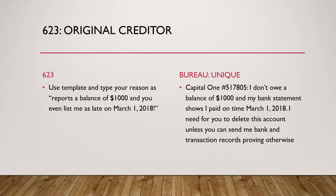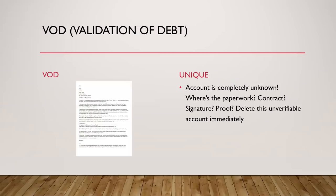In the 623 template you type your reason — it's a copy-paste format where you fill in the information that pertains to you. For example, the reason might be: 'Reports a balance of $1,000 and shows late on March 1st, 2018.' On your bureau dispute for that same account it would say: 'Capital One account number 517805 — I don't owe a balance of $1,000 and my bank statement shows I paid on time March 1st, 2018. Please delete this account unless you can send me a bank statement and transaction records proving otherwise.'